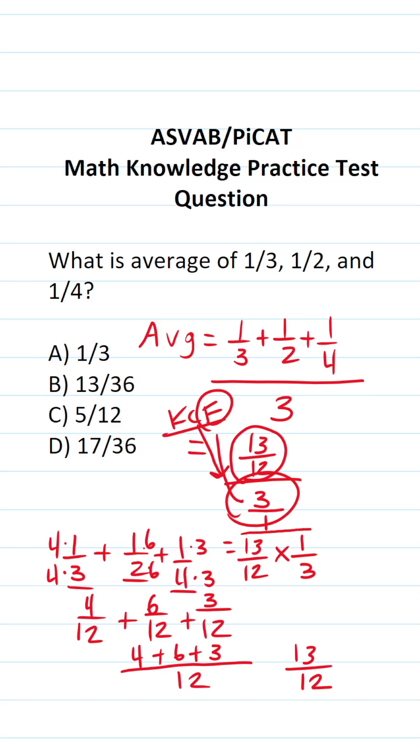When you multiply fractions you multiply straight across. So this becomes thirteen times one which is thirteen. Twelve times three is going to be thirty-six. So the average of one-third, one-half, and one-fourth is thirteen over thirty-six. As it happens we can't reduce this so the correct answer to this one is going to be B.